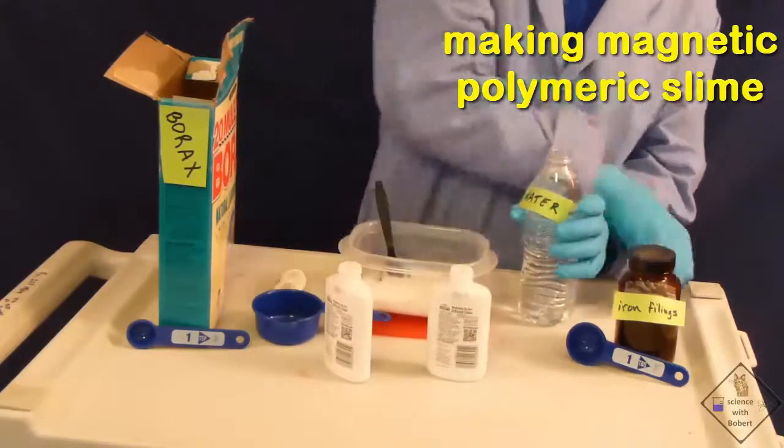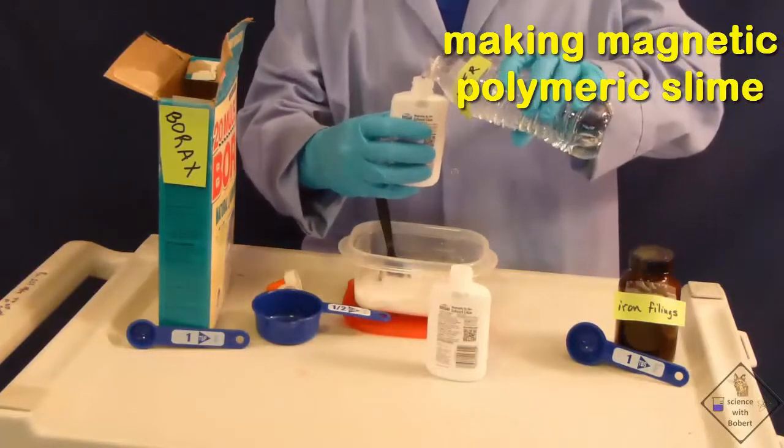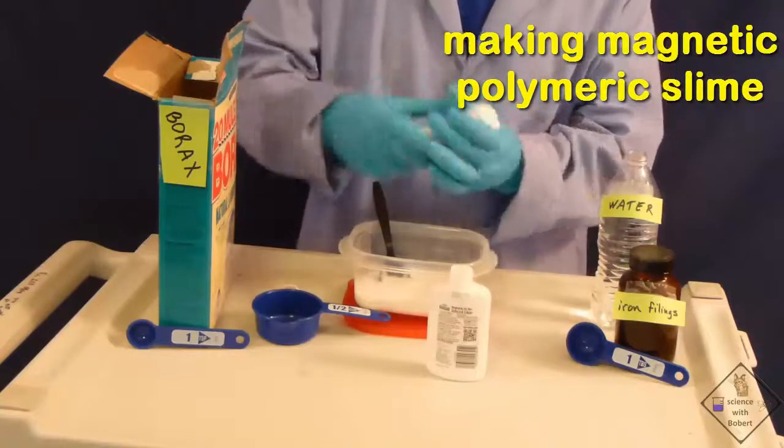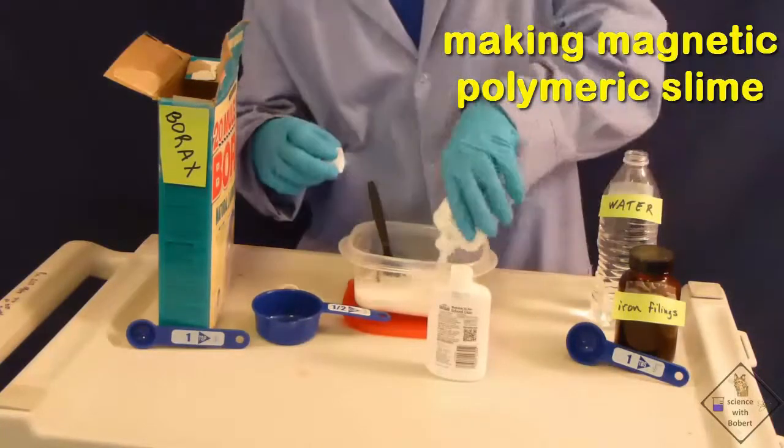He then adds water to one of the glue bottles and shakes the bottle to remove the rest of the glue. He adds the entire rinsing to the mixing container.